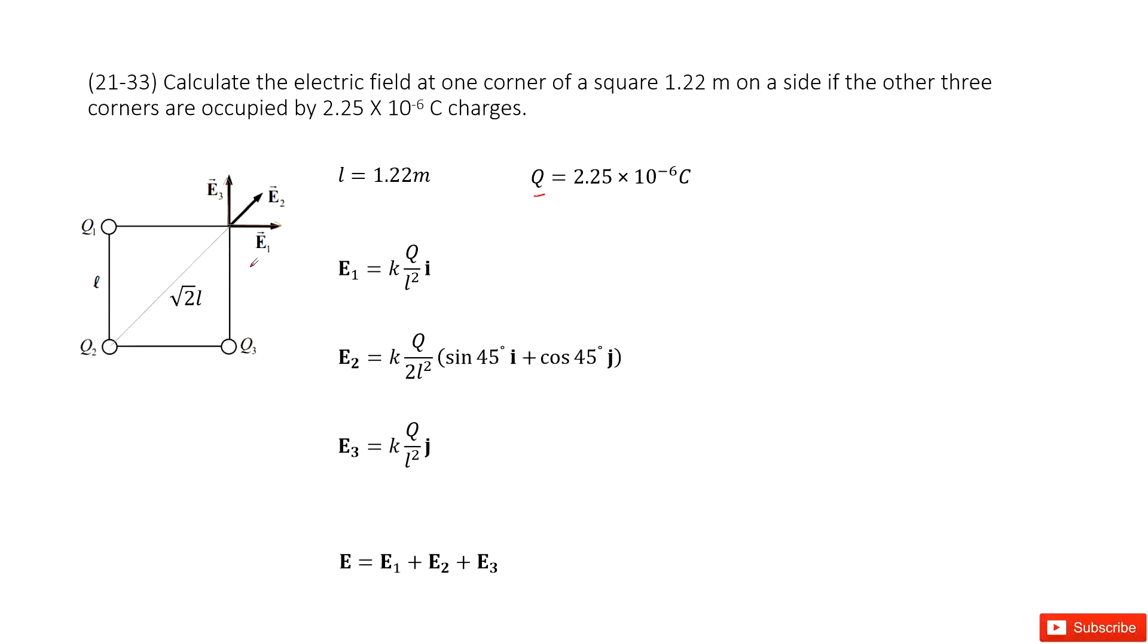At this corner the electric field comes from three parts: E1 from Q1, E2 from Q2, E3 from Q3. Because these are point charges, the electric field is pointing radially outward.